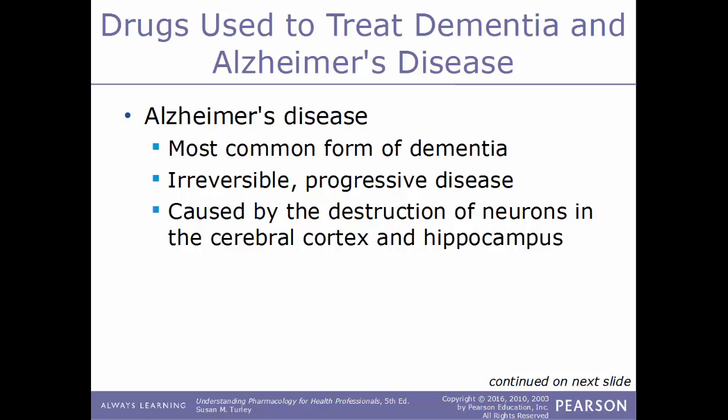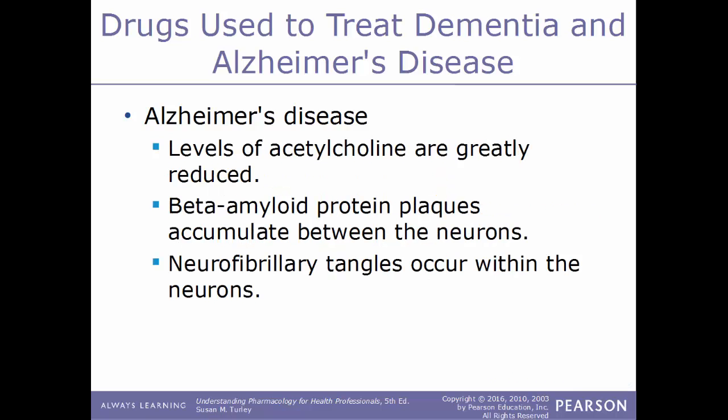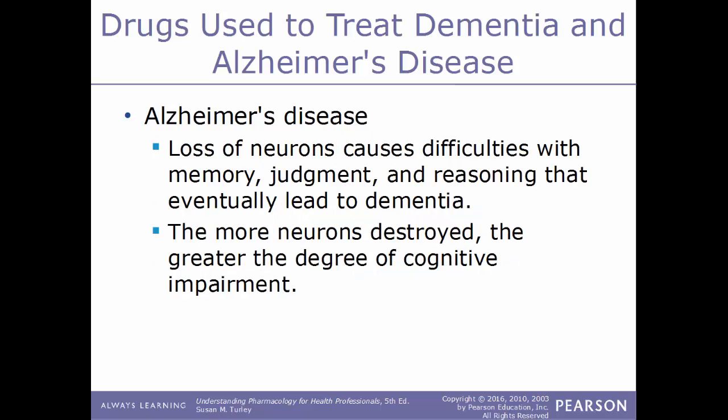Alzheimer's disease is the most common form of dementia — an irreversible, progressive disease caused by destruction of neurons in the cerebral cortex and hippocampus. In Alzheimer's, acetylcholine levels are greatly reduced; beta-amyloid protein plaques accumulate between neurons; and neurofibrillary tangles occur within neurons — the primary marker indicating Alzheimer's. The loss of neurons causes difficulty in memory, judgment, and reasoning that eventually leads to dementia, with greater neuron destruction causing greater cognitive impairment.